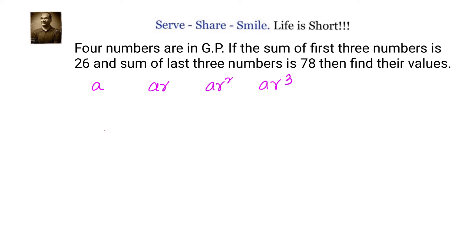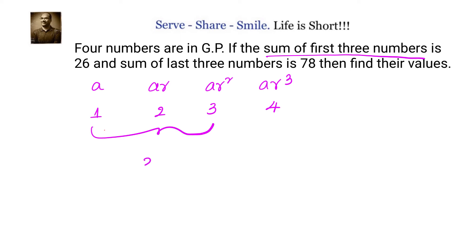We have been given that the sum of the first three numbers is 26, that means a + ar + ar² = 26. And the sum of the last three numbers is 78, that means ar + ar² + ar³ = 78.